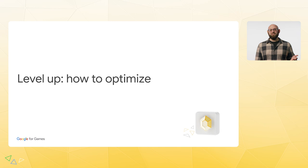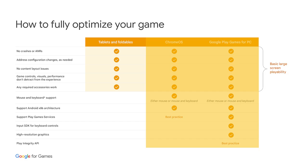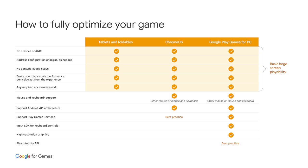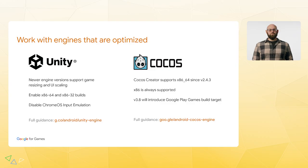So let's say you're ready to optimize your game and you need to know what to do. To create a great game on any platform, you need to hit the criteria for basic large screen optimization. For Chrome OS, add mouse and keyboard support for x86 builds. For Google Play Games for PC, add those plus support for Play Game Services, the Input SDK for keyboard controls, high-resolution graphics, and the Play Integrity API. You can see how optimizing for Google Play Games for PC will also provide a fully optimized experience for Chrome OS, tablets, and foldables.